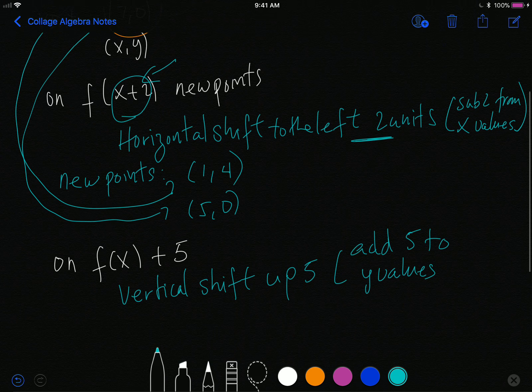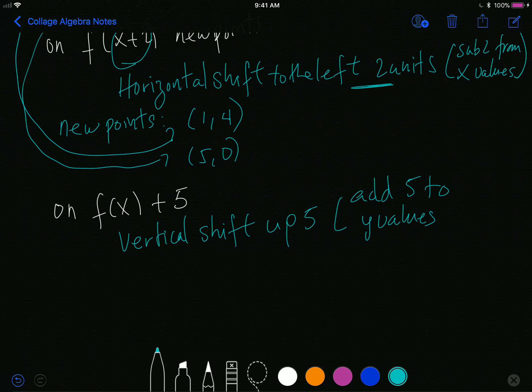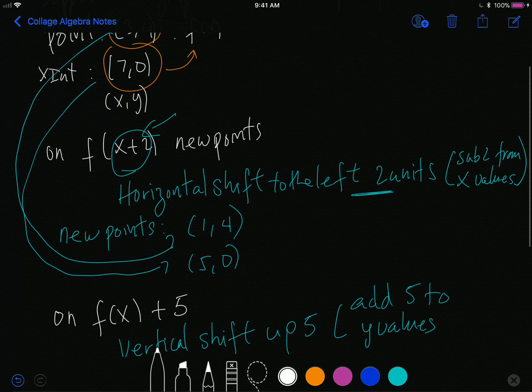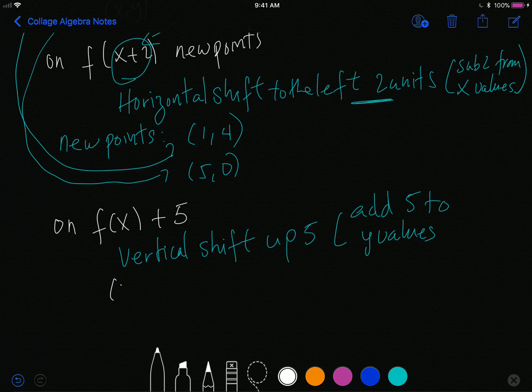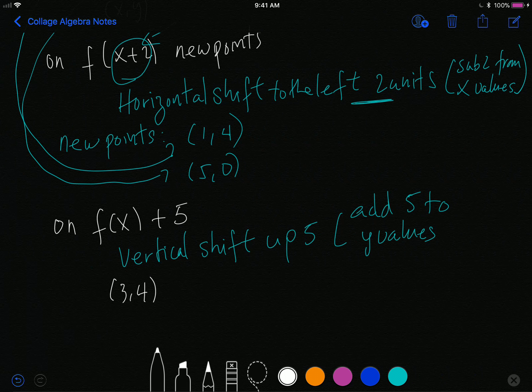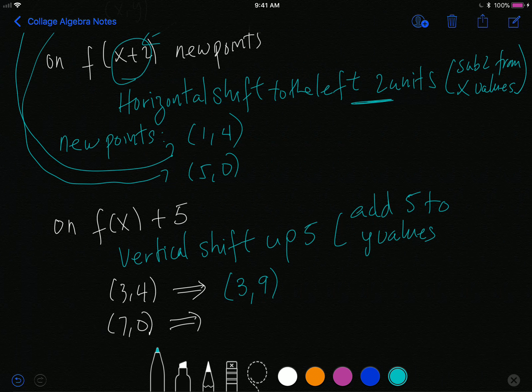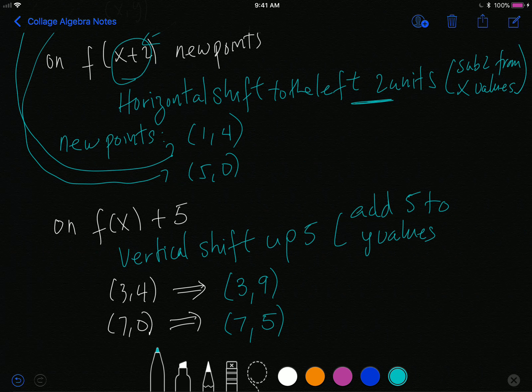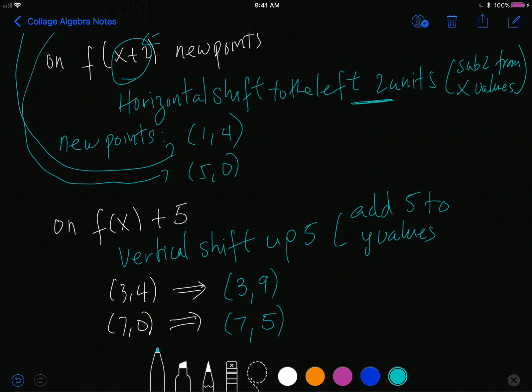Let me rewrite the original points. The original points were (3,4) and my x-intercept was (7,0). And to each of those, after I apply the vertical shift, the new point is the unchanged x value, followed by an updated y value. I'm adding 5.